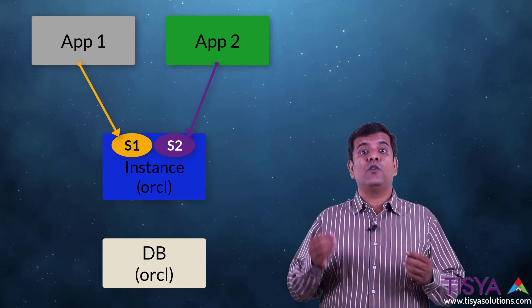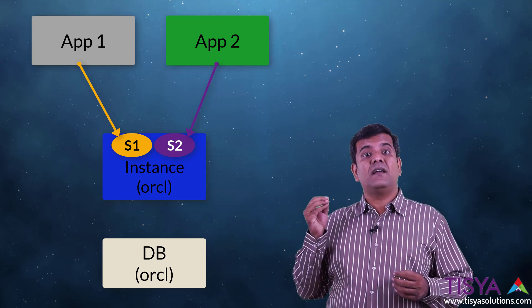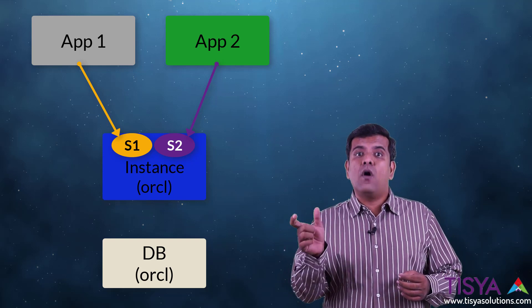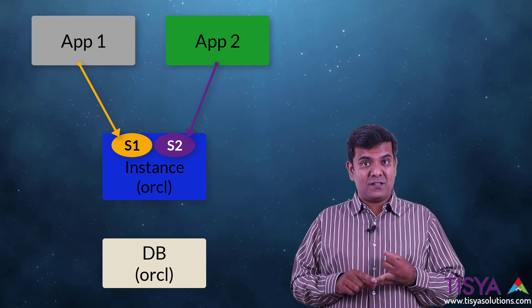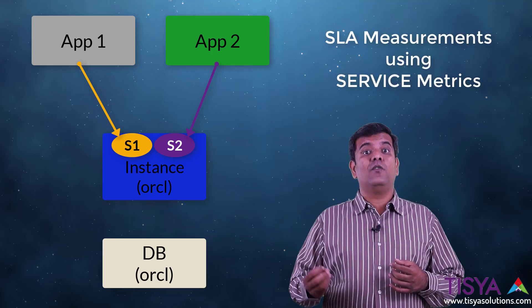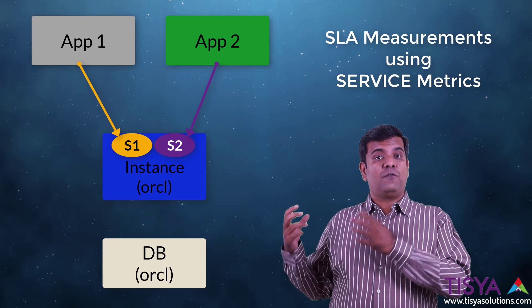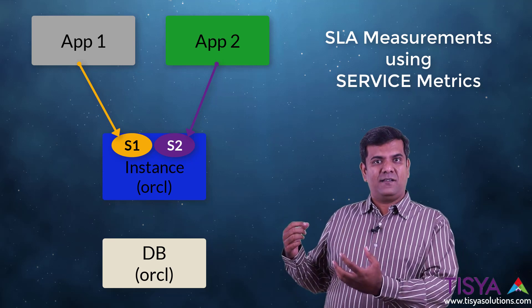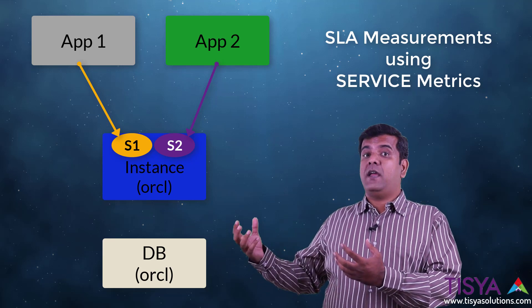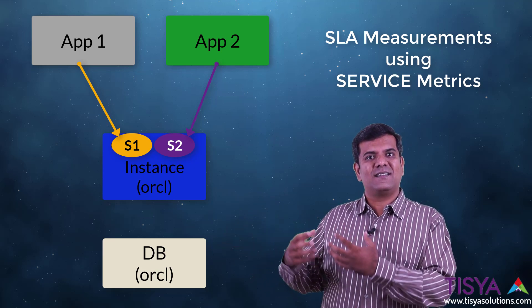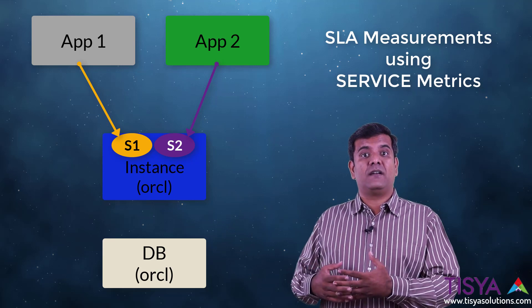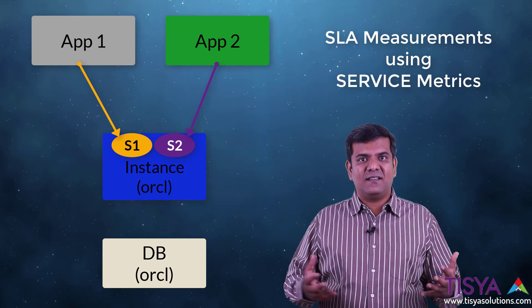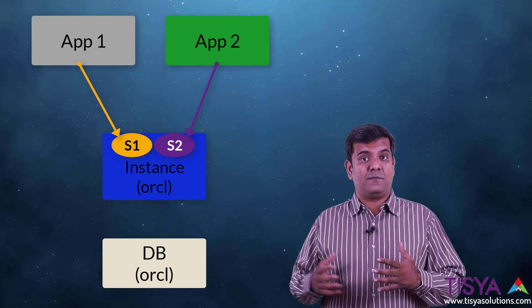Number two, you can also go and tell in case a particular service to which a session is connected, if it has more than a certain amount of CPU consumed or response time for a SQL, then you can generate alerts. This is useful when you have two applications and one application you need the database to respond within, let's say two milliseconds, whereas the other one you're okay with up to one second response time. The service metric will enable you to tell whether the response time is meeting your SLA. This is a very important aspect with respect to services.